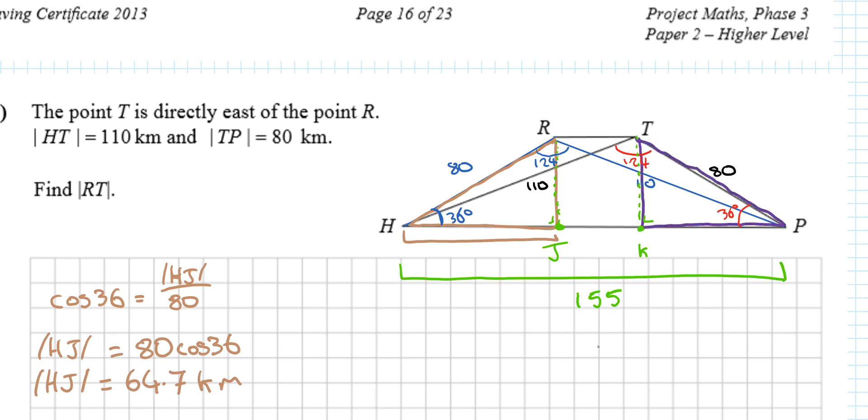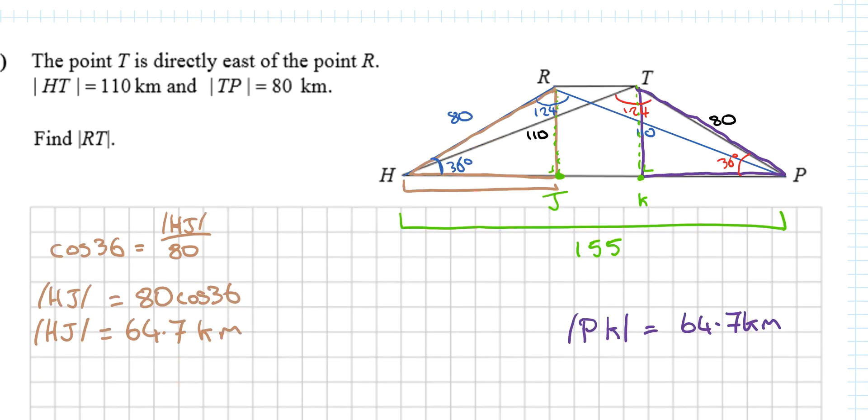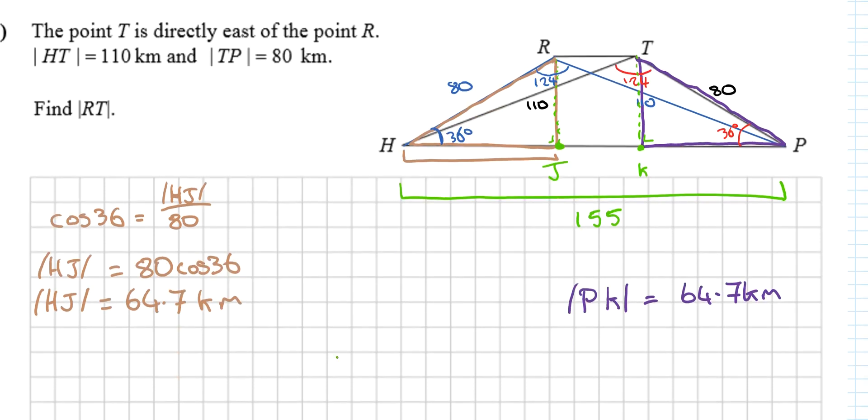So PK will also be 64.7 kilometers. Then JK = RT = 155 minus 64.7 times 2.